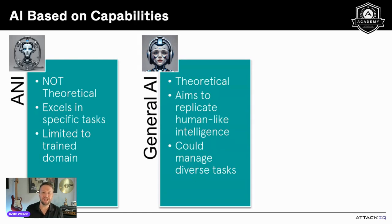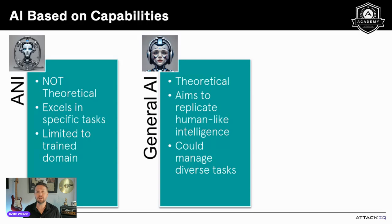Then there's General AI. General AI is theoretical — it's not seen in practice. It's a concept trying to replicate human-like intelligence and allows it to understand, learn, and apply knowledge across various domains. It's different from ANI in the fact that General AI could potentially manage diverse tasks anywhere from urban planning to scientific research without needing retraining for each new context.